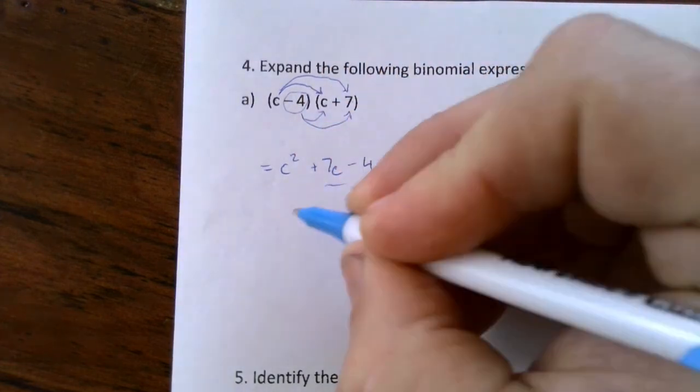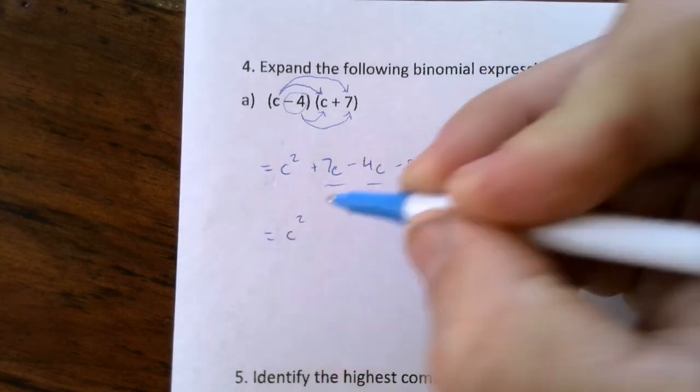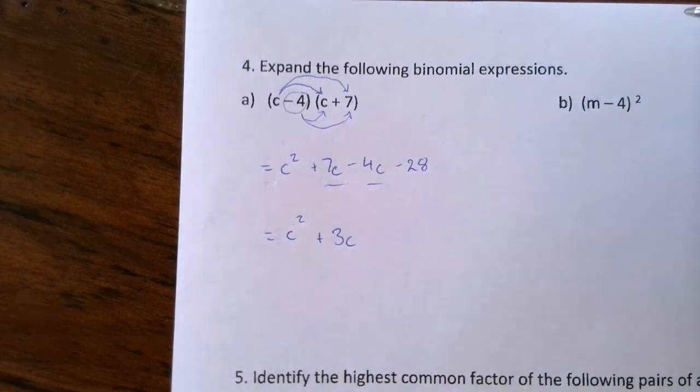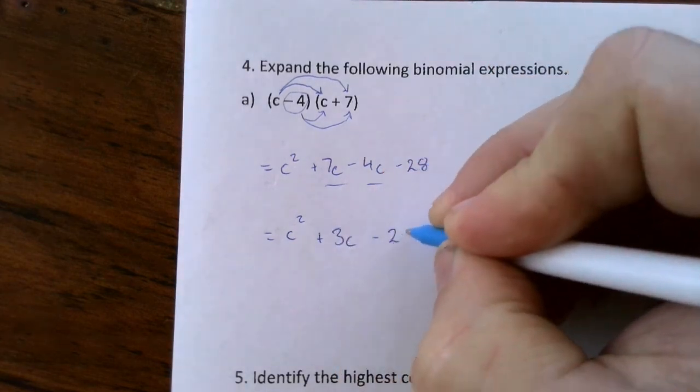Now we collect our like terms and simplify. So I've got c squared. Then I've got 7c's and I take 4 away, leaving me with 3c's. And then I've got negative 28 on the end.